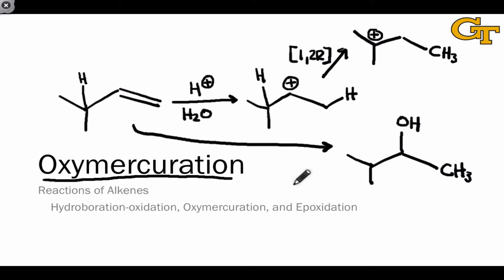Similar to halogenation, oxymercuration avoids the formation of a discrete carbocation intermediate through the formation of a key three-membered ring intermediate in which the positive charge is located, in this case, on a mercury atom.